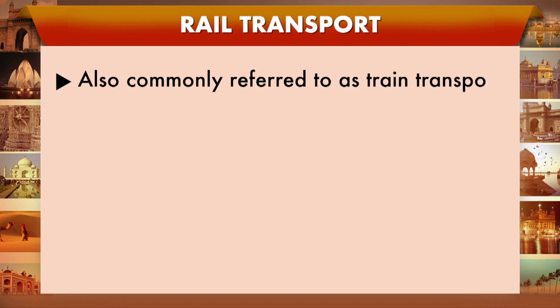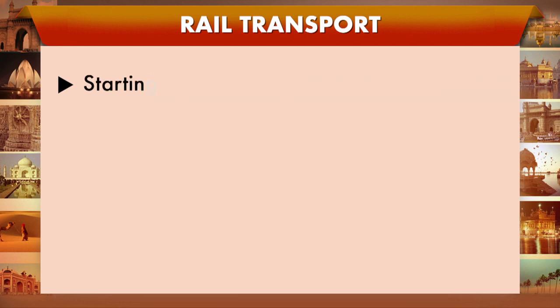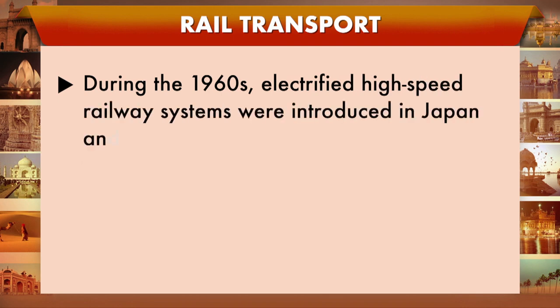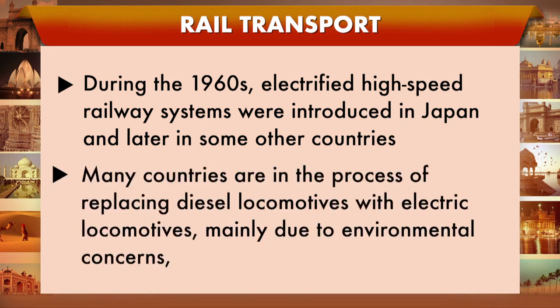Indian Railways is one of the largest railway networks in the world. Rail transport, also known as train transport, commenced in its modern form with the British development of steam locomotives in the early 19th century. During the 1940s, steam locomotives in most countries were replaced by diesel-electric locomotives. During the 1960s, electrified high-speed railway systems were introduced in Japan and later in other countries. Most countries are now replacing diesel locomotives with electric locomotives, mainly for environmental concerns.